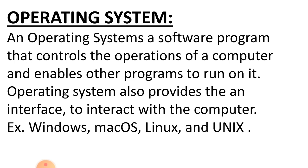Examples of operating system: Windows. Windows operating system aapko pata hai — jab hum computer lab mein computer on karte hai, to aisi black color ki screen hoti hai, us black color ki screen pe aapko aise 4 color ki window dikhti hai. To woh kya hai? Windows operating system. It's an icon of a Windows operating system.